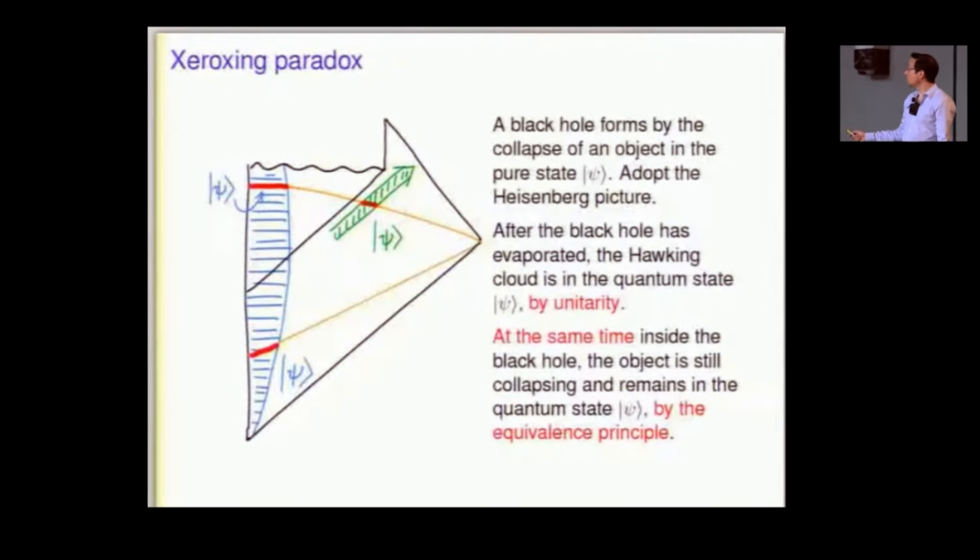Now, at the same time, at a space-like related distance, in other words, inside the black hole, we have this star happily collapsing away. And again, I can choose this so that it's still very far from the singularity and curvatures are not high. And the star, by the equivalence principle, crossed in unhindered. Nothing happened to it. It's still in the quantum state psi.